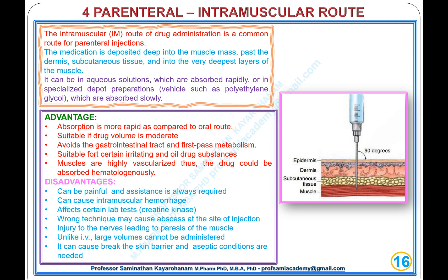Type 4, Parenteral: Intramuscular Route. The intramuscular route is a common route for parenteral injections. The medication is deposited deep into the muscle mass, past the dermis, subcutaneous tissue, and into the deepest layers of the muscle. It can be in aqueous solutions, which are absorbed rapidly, or in specialized depot preparations in vehicles such as polyethylene glycol, which are absorbed slowly.